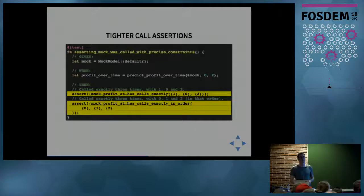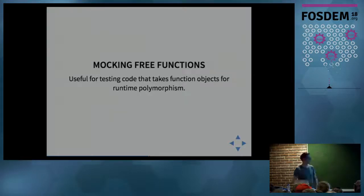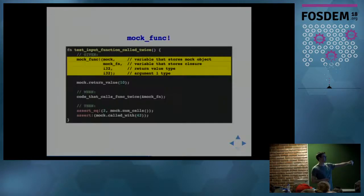We can also mock free functions. For example, if you're passing in some function, a box function for runtime polymorphism, you can generate something for that as well. Here we have mock_func. We specify the actual mock object that stores all the bookkeeping, the actual function itself which is just a closure, and then the return types and argument types.